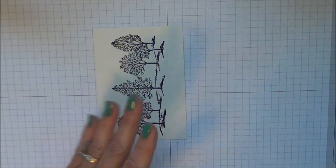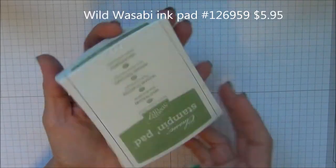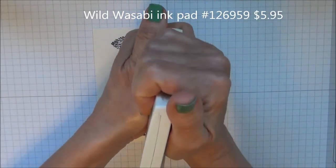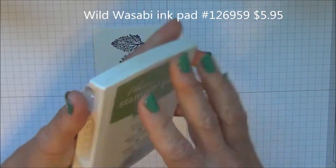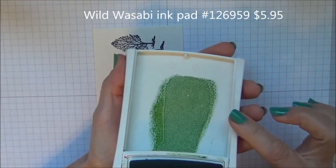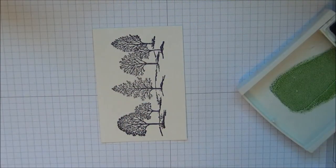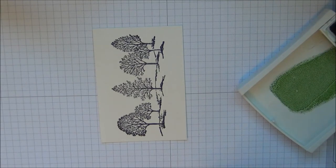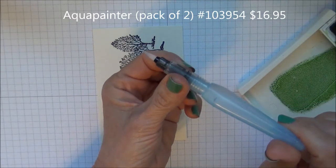To apply the color, we're going to use Wild Wasabi ink. You're going to squish the pad like this and then when you open it up you'll notice there's quite a bit of ink on the lid. You can use a regular watercolor paint brush but I like to use our Aqua Painter. It's refillable.